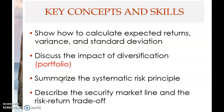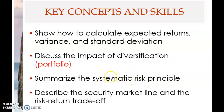The third key concept is to look at the systematic risk principle. Here we look at the outcome of diversification. We find that there is something called systematic risk, and this systematic risk is relevant. When there is more systematic risk, there must be more compensation — more return. Therefore, this is called the systematic risk principle.